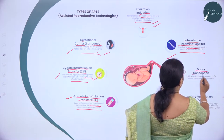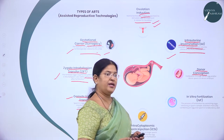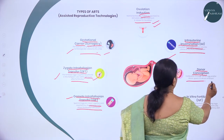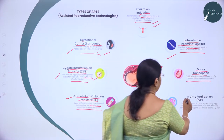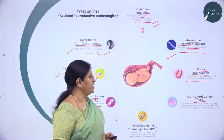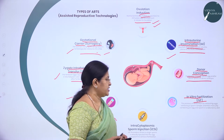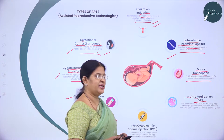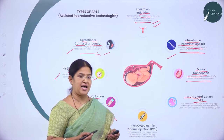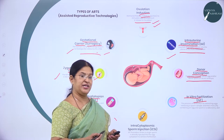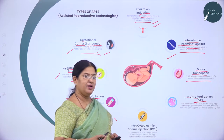Donor conception involves fertilization through a donor egg, donor sperm, or donor embryo. Then there is in vitro fertilization — commonly called test tube baby. It is the process of fertilization by extracting eggs, retrieving a sperm sample, and then manually combining an egg and sperm in a laboratory dish. It is done in glass, hence called 'in vitro' or test tube.